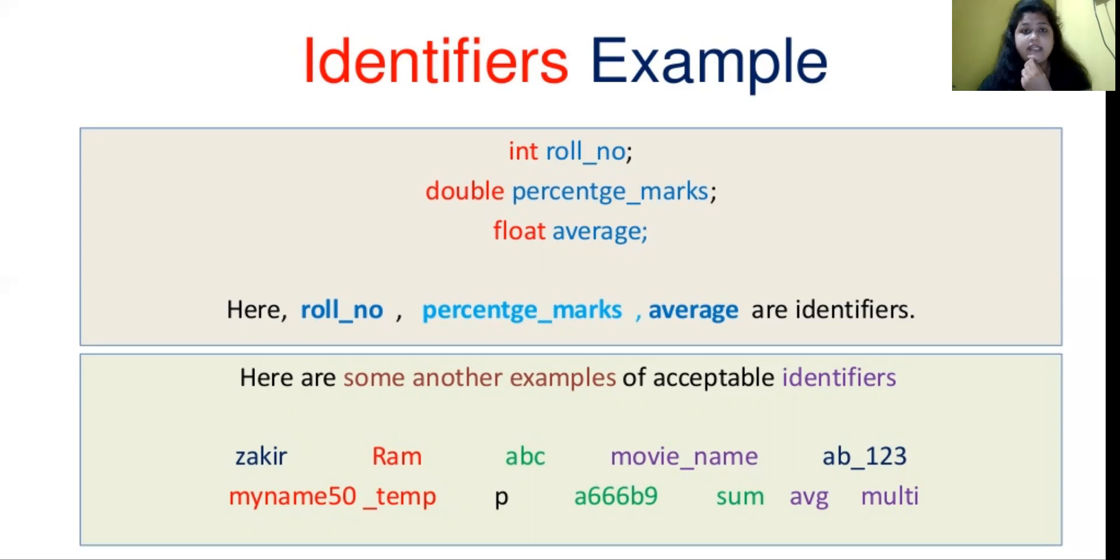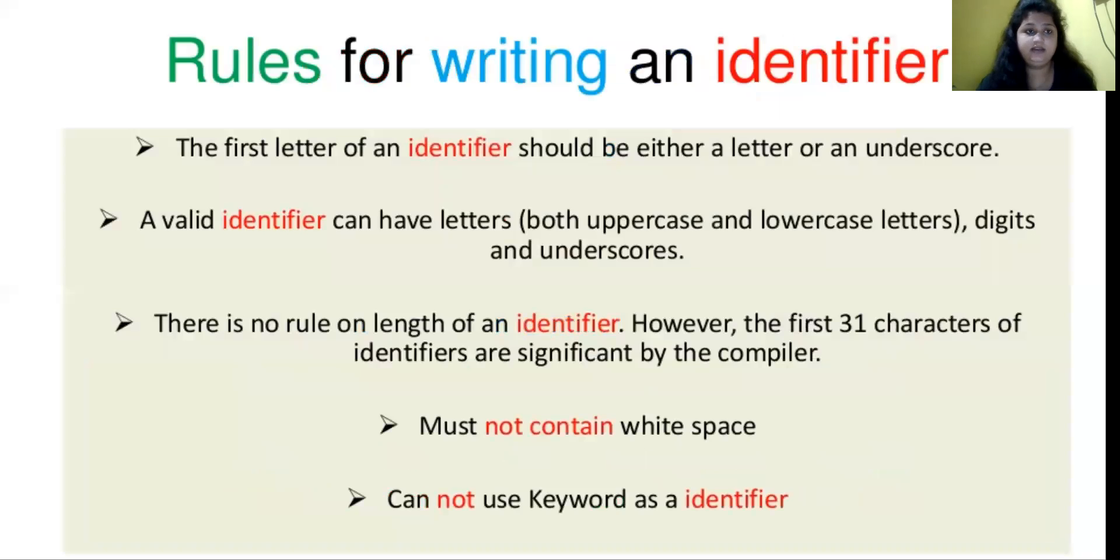The first letter of an identifier should be either a letter or an underscore. A valid identifier can have letters both uppercase and lowercase letters. There is no rule on length of an identifier. However, the first 31 characters of identifiers are significant by the compiler.